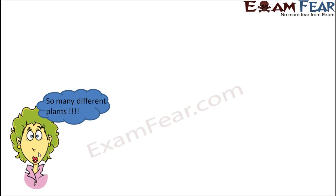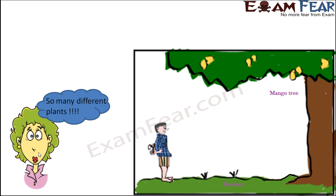When you look at so many different plants it can feel difficult to study them all. For example, compare a huge mango tree — with its large brown bark, many leaves, and fruits — with the tiny grasses at the ground, which are just a few inches tall and cannot grow taller. Both are plants, yet they are so much different from each other.